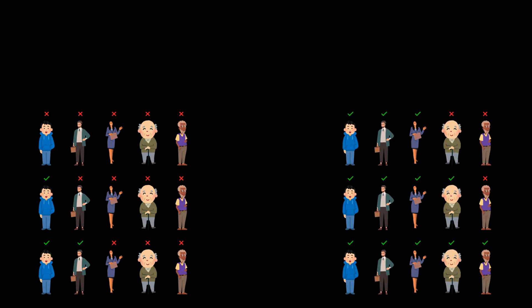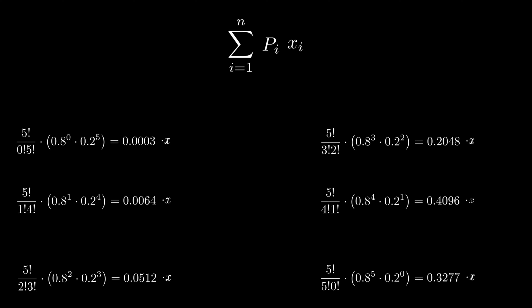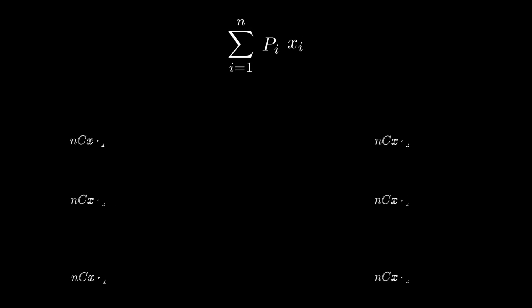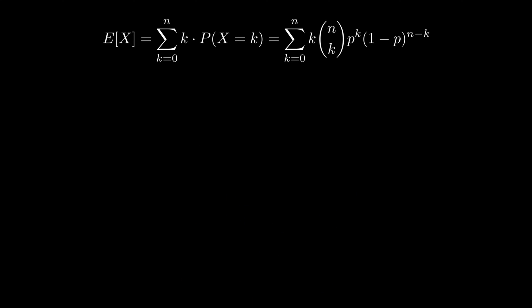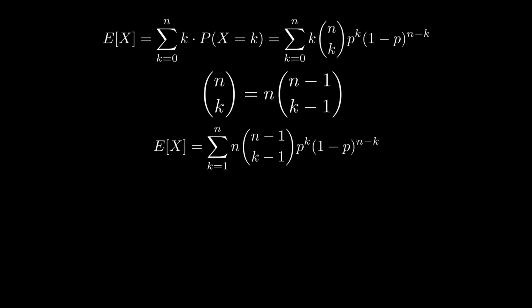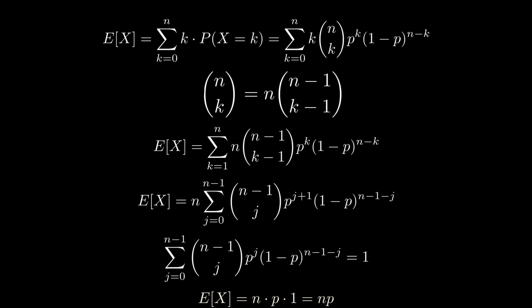We can find the probability of each outcome as nCx · p^x · q^(n−x). Computing the summation of probability times outcome gives us 4 again — matching n·p numerically. But as true students of statistics, our curiosity should not end with a numerical proof. The mathematical proof starts with the expected value summation, substituting the PMF nCx · p^x · q^(n−x), and after a few simple manipulations we arrive at n·p.